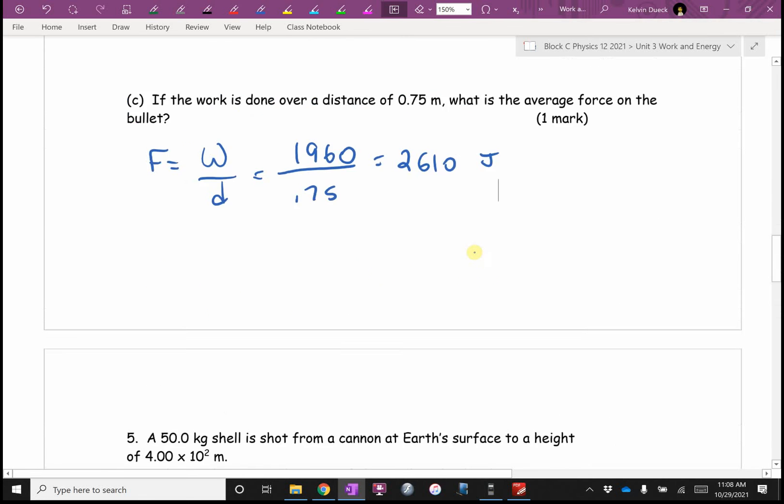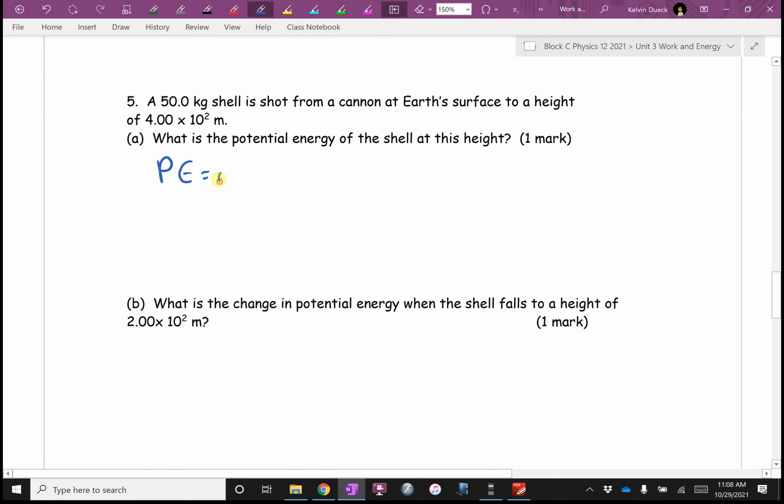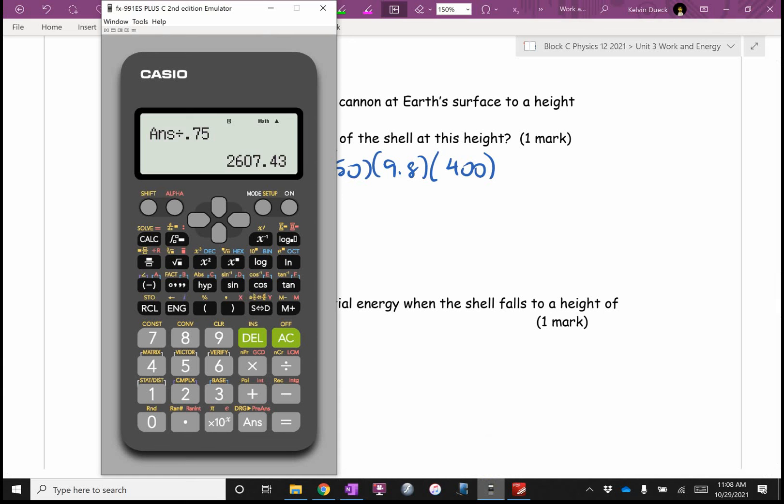Number five. What is the potential energy? Okay, PE should be mgh. Did they give me a height? Yes they did. So it's going to be 50 times 9.8 times 400. 50 times 9.8 times 400, you get 196,000 joules of energy.